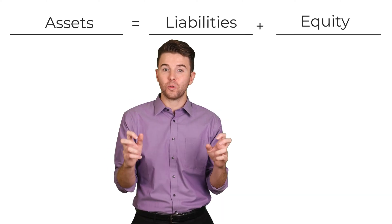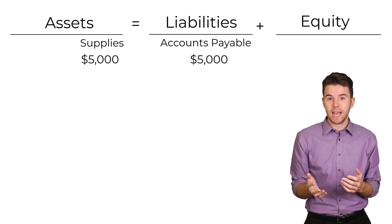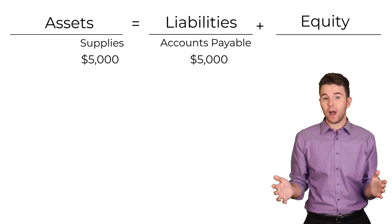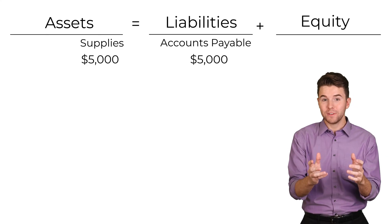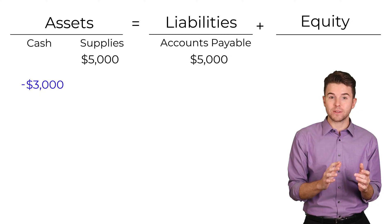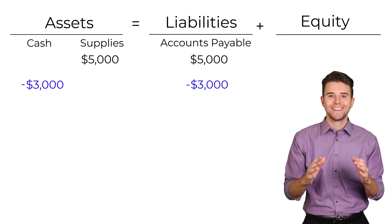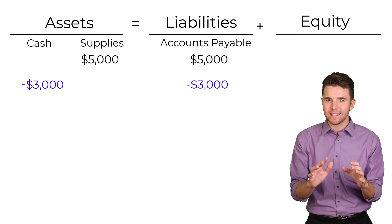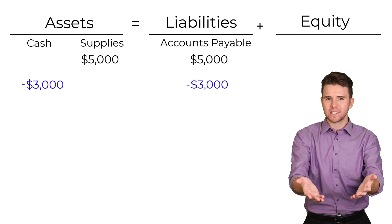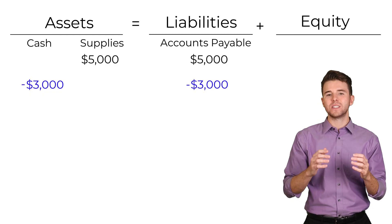Now we also have to pay cash for the supplies we purchased earlier on credit. If you remember, we initially recorded an accounts payable for the transaction. Instead of paying the full amount now, we will make a partial payment of $3,000. To account for this, we decrease assets by $3,000 and decrease liabilities under accounts payable for $3,000. This payment does not create an expense even though cash flows out of the business. Instead, the expense will be recorded after we actually use the supplies.